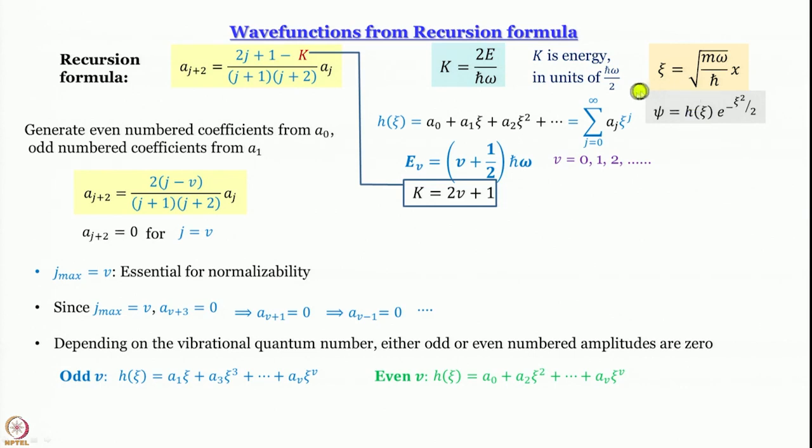What we are trying to do is find out what this H of psi is. For very large values of psi it is a constant, but for all values of psi we have expressed it as a power series: H of psi is sum over j equal to 0 to infinity a_j psi to the power j. Then we have written this recursion formula a_j+2 in terms of a_j, and we have put in j minus v. Hence we have proved that j_max is equal to v.